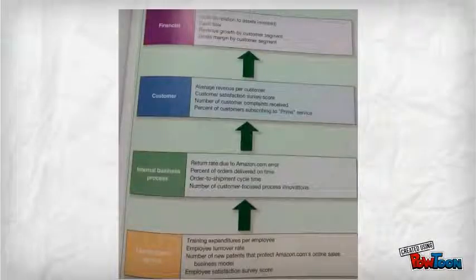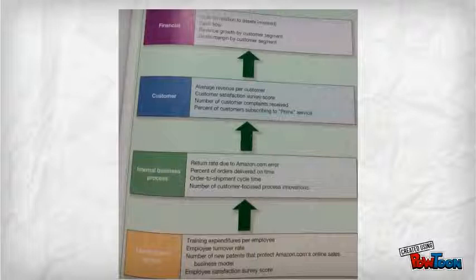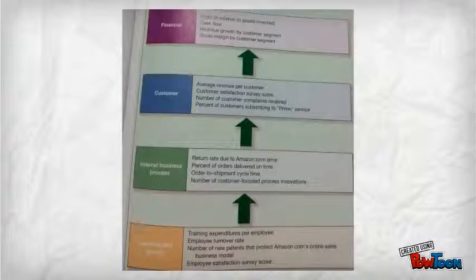There is a correlation between lead and lag indicators that can be seen using a cause and effect relationship. Using a lead indicator like adding training hours, which is learning and growth, leads to an increase of customer service, which is internal business process. This leads to regular customers, which is customer, which in the end leads to the goal of profitability, which is financial.